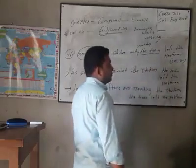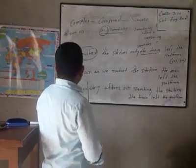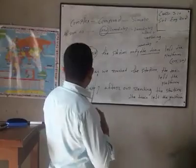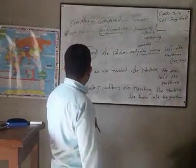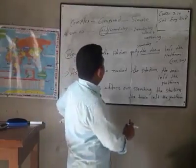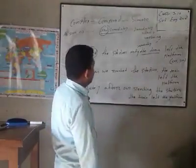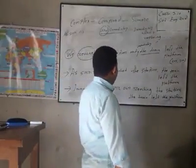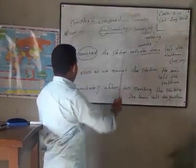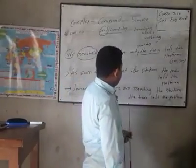Our question was: 'We reached the station and immediately the train left the platform.' And our answer in complex sentence is: 'As soon as we reached the station, the train left the platform.' And in simple sentence I have written: 'Immediately after our reaching the station, the train left the platform.'